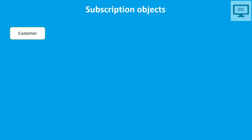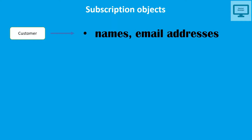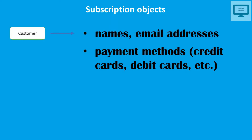First, let's look at the Stripe subscription object. First of all, you need a customer. A customer is your buyer — the person who is going to purchase what you are selling. For a customer, you need their name and email address, and you also need to collect their payment details, whether they pay using a credit card, debit card, or another payment method.